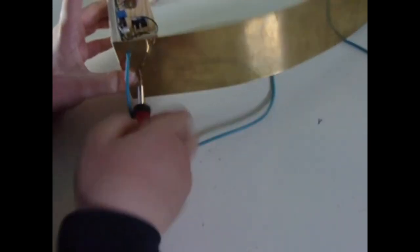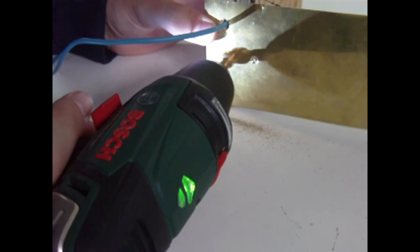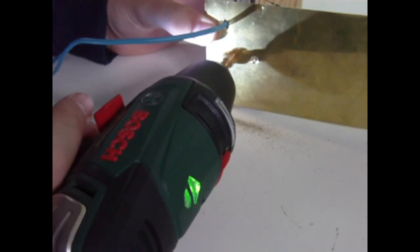Now I will screw the brass sheet in place. I countersunk the hole so that the screws can be flush with the surface.